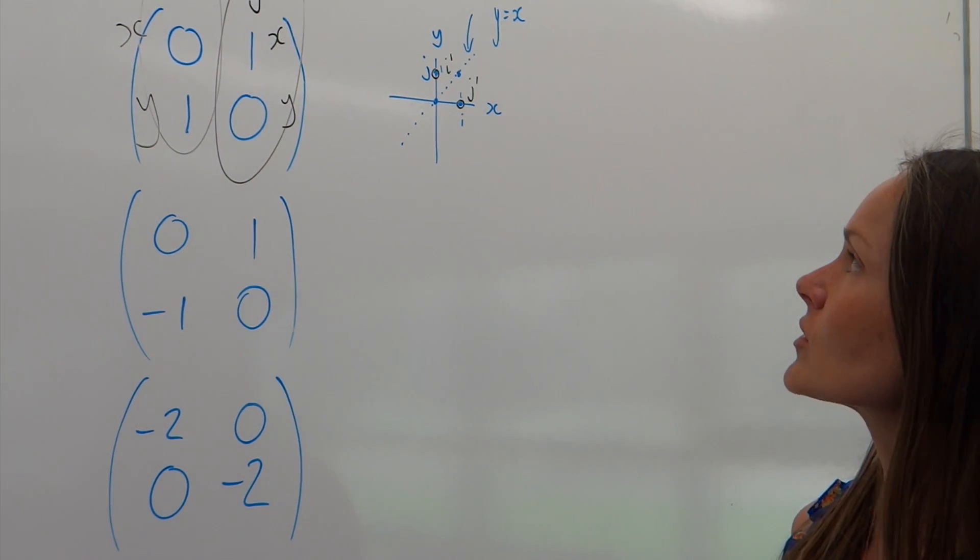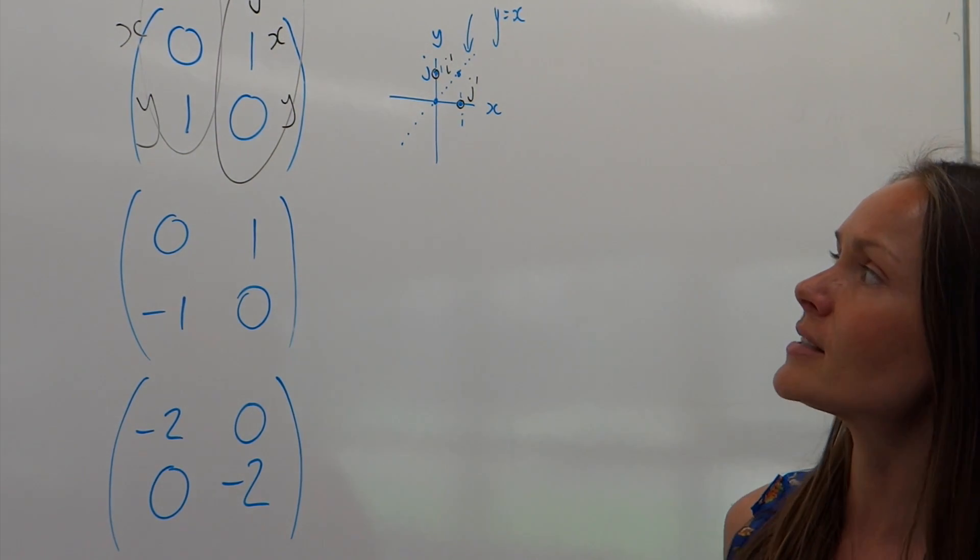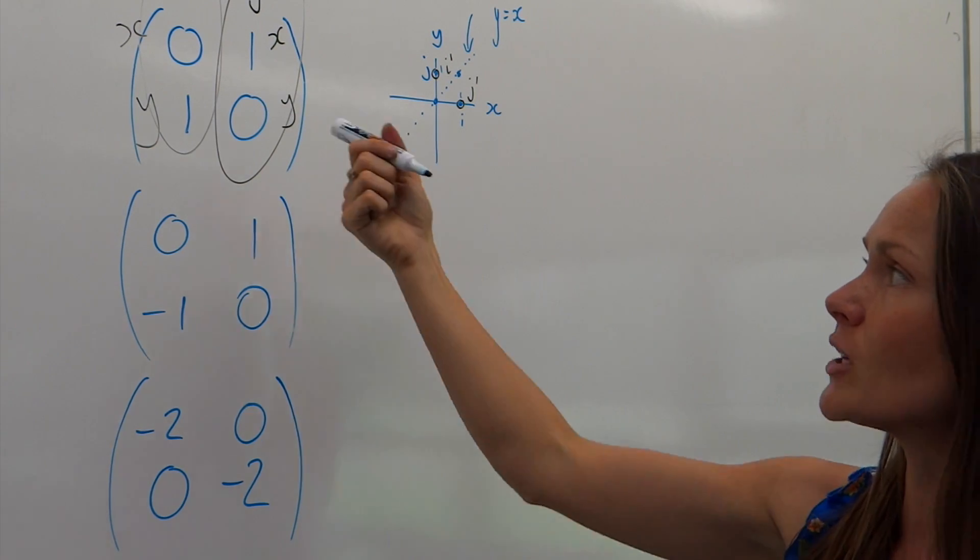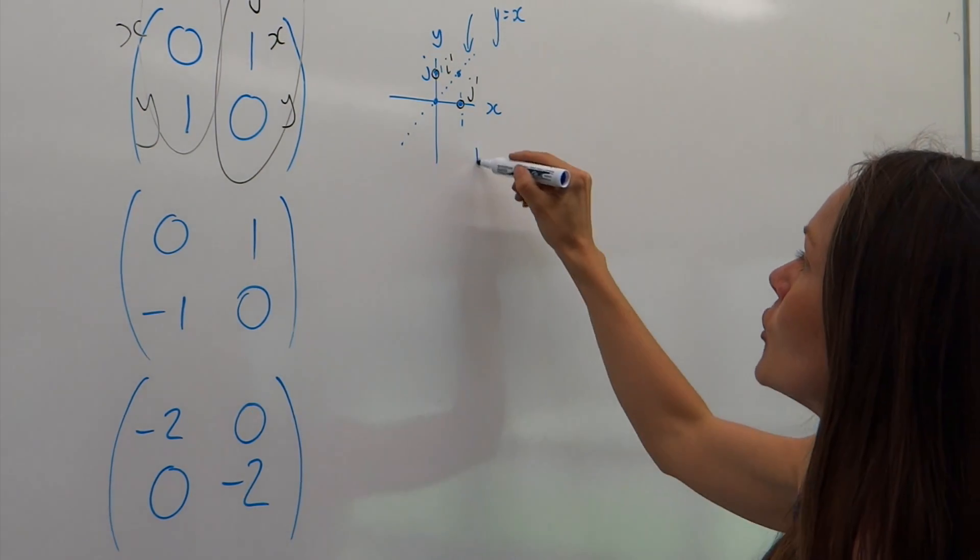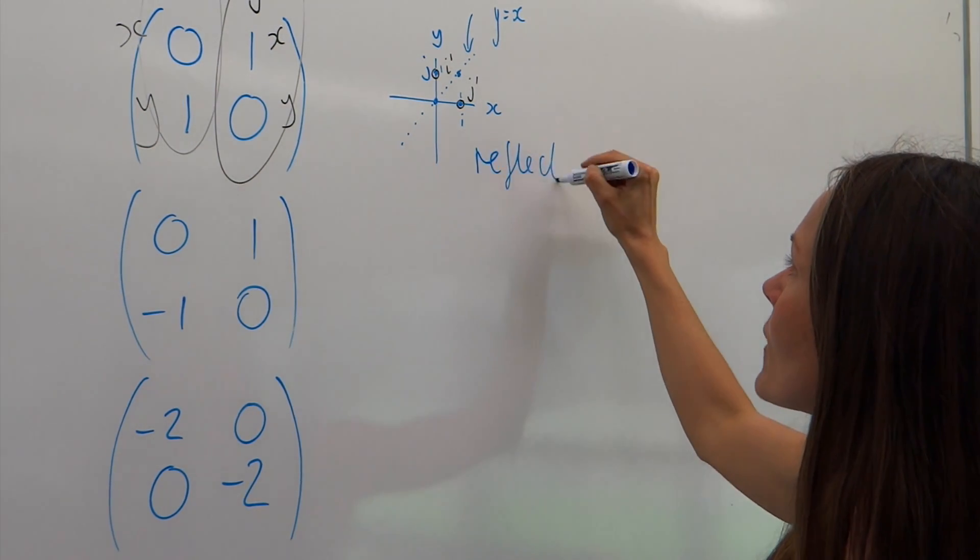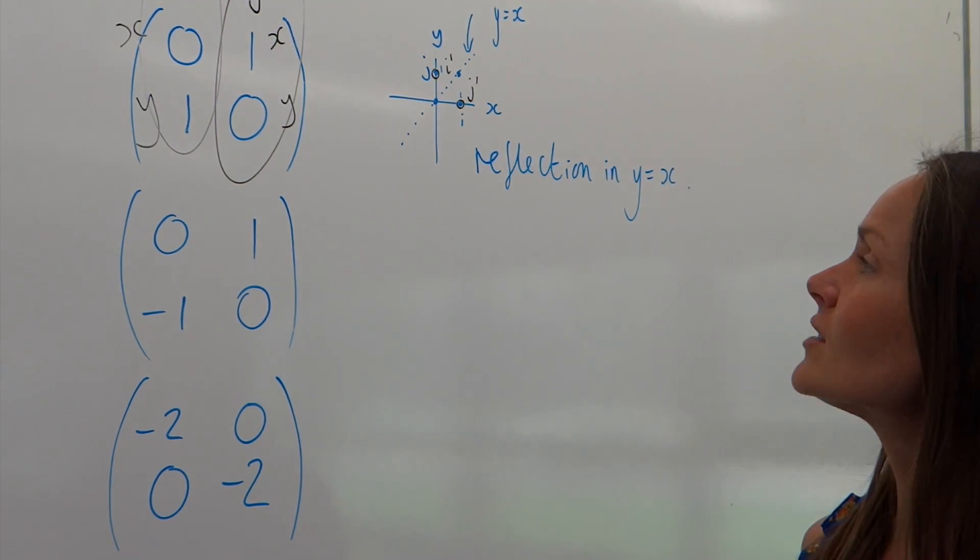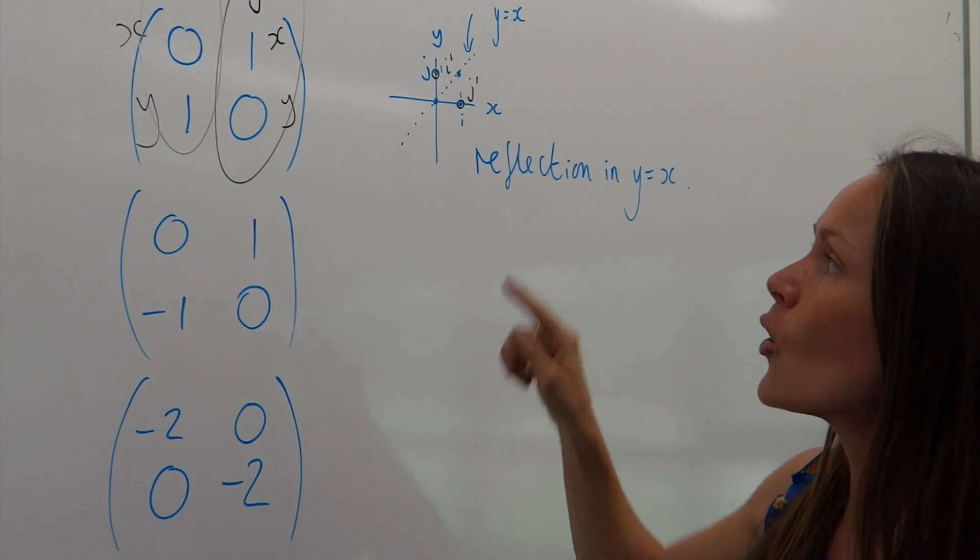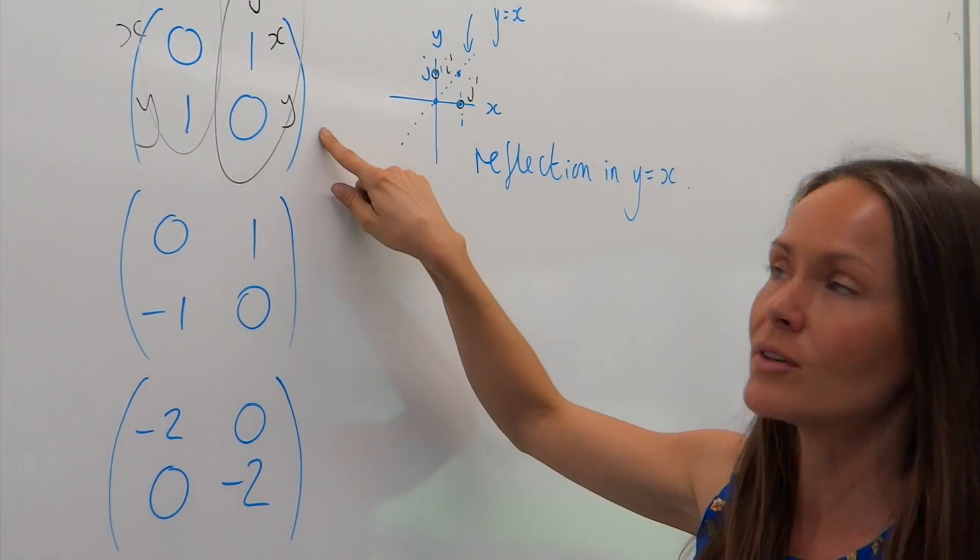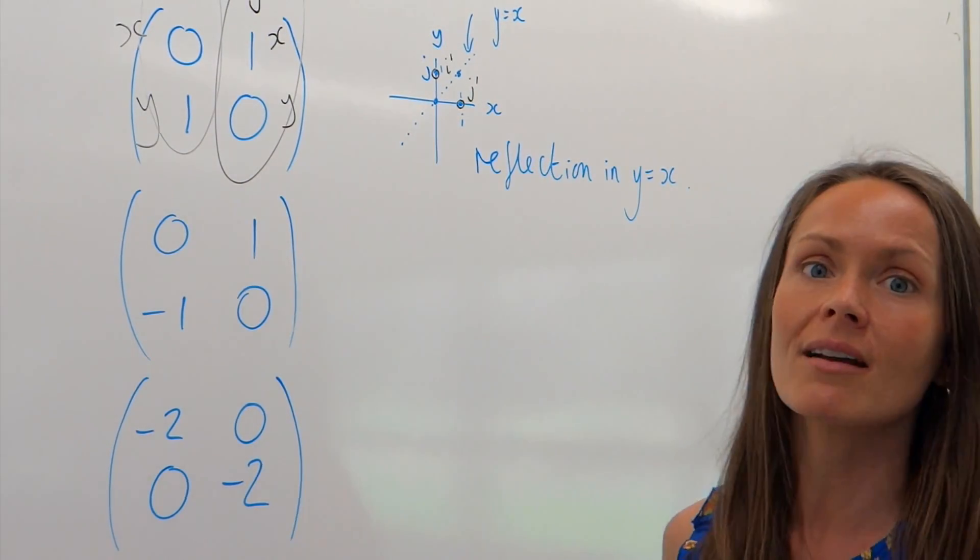So, to get full marks on this question, if it says state the transformation of this matrix, you would have to write the word reflection along with the equation of the mirror line. So, that is how to identify what type of transformation is given here in the matrix using base vectors.